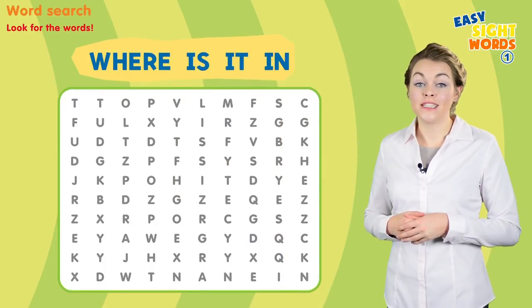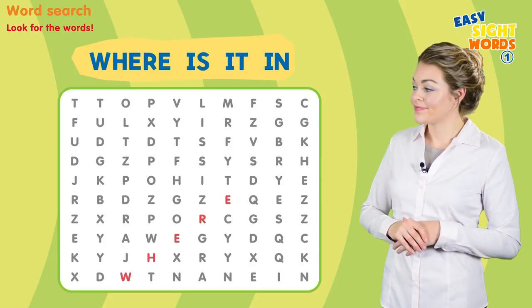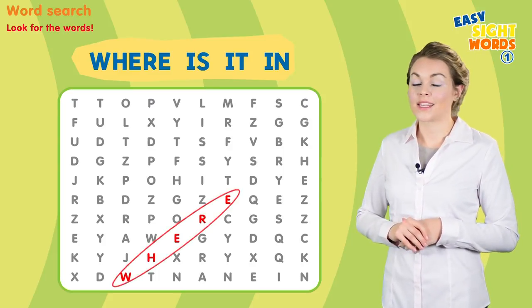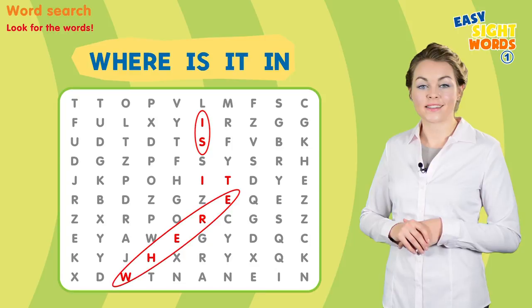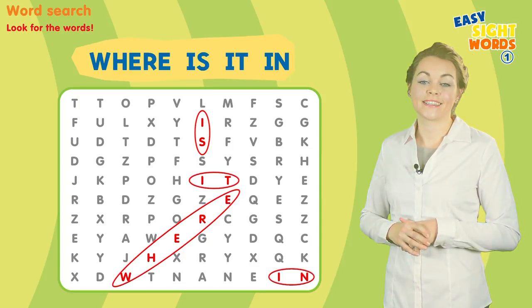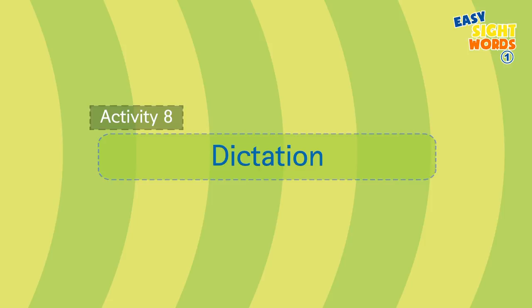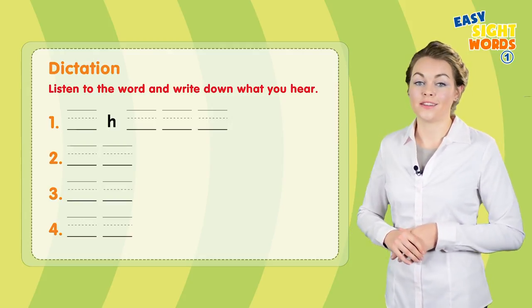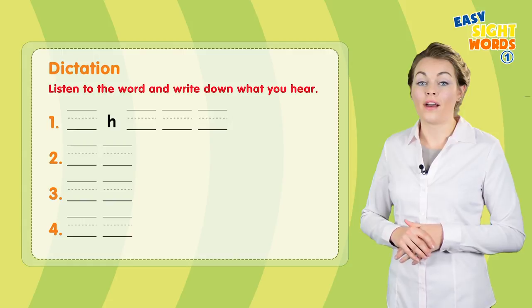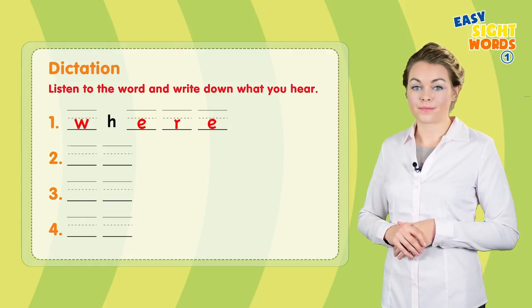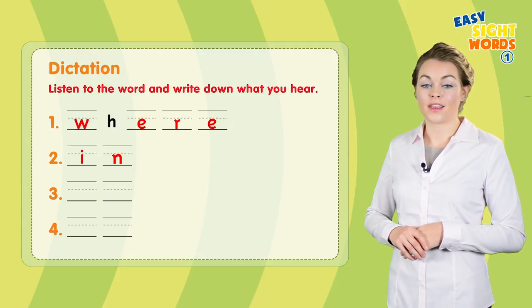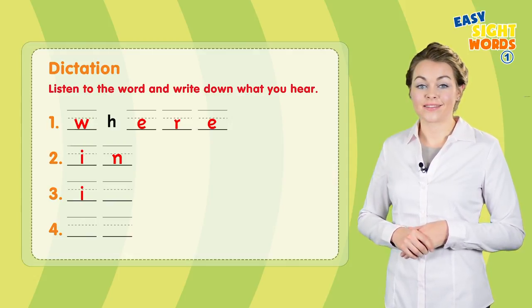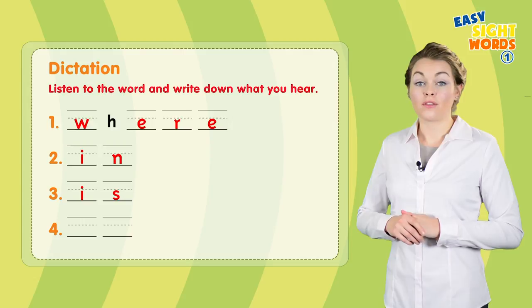Now search for the words in the word search. Where is the bird? Where is it? It is in the tree. Number one: where is the bird? Number two: in. Three: is. Four: it.